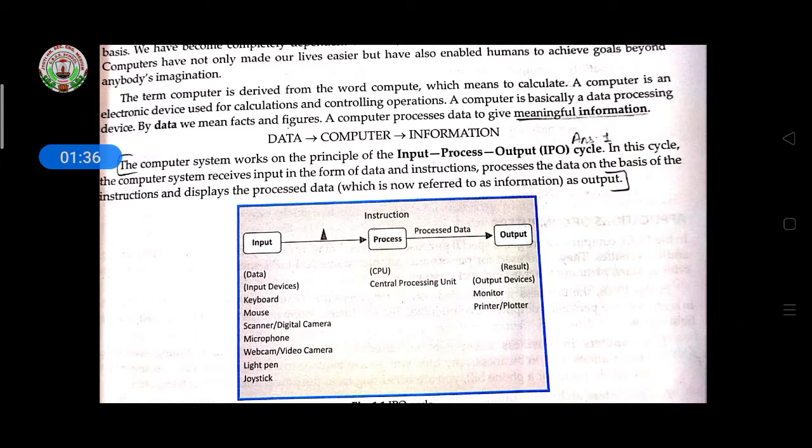This work is known as IPO cycle - Input Process Output. Input means with the help of input devices you are giving instructions or data to your computer, then in CPU it will process, and then it will show the result as output.